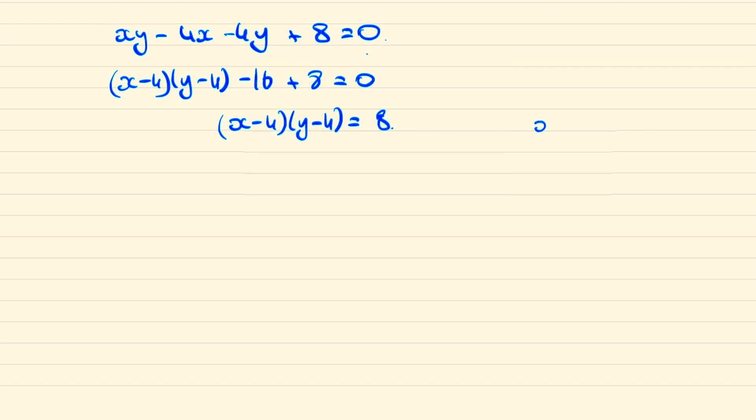We noted at the start that x was less than y so we have two possible solutions here. We could have that x minus 4 is 1, y minus 4 is 8, or it could be 2 and 4. From the first case we have that x will be 5 and y will be 12, and from the second case we have that x will be 6, y will be 8.